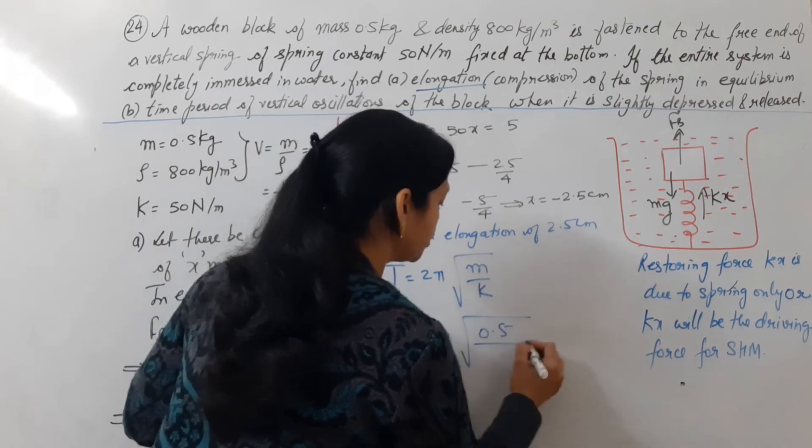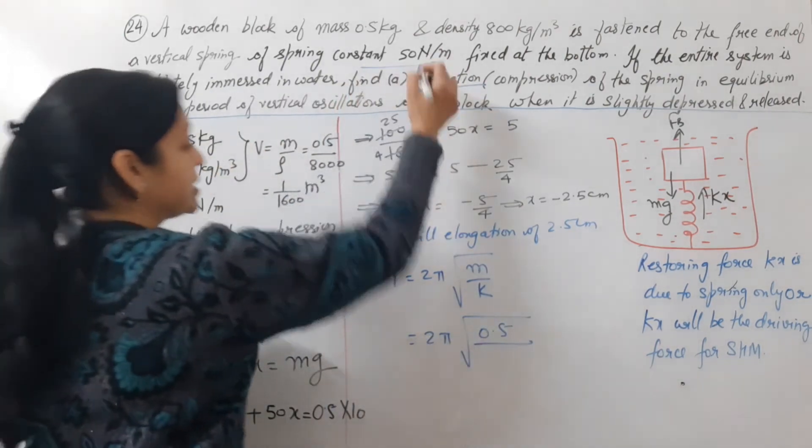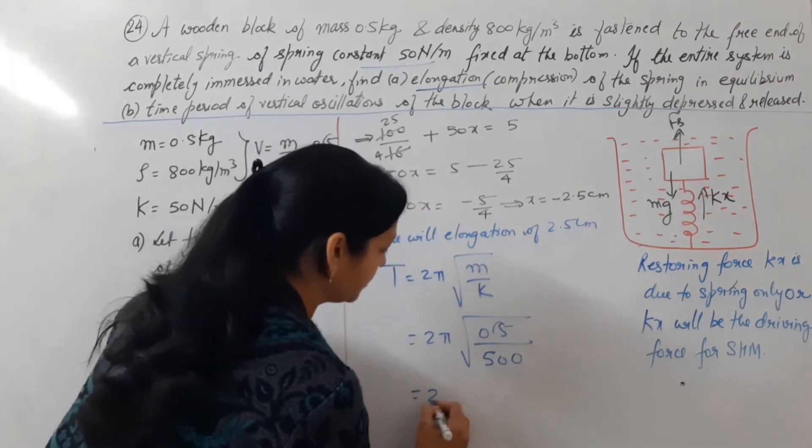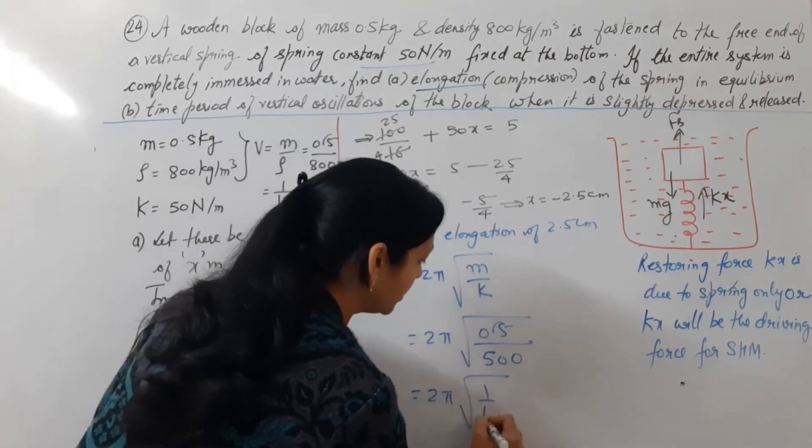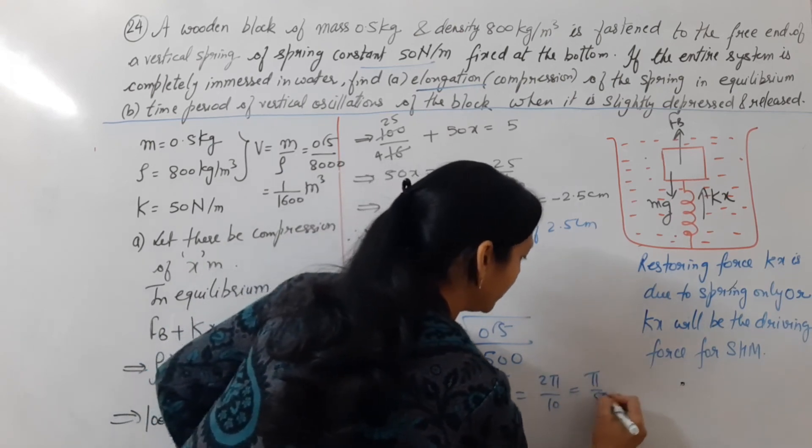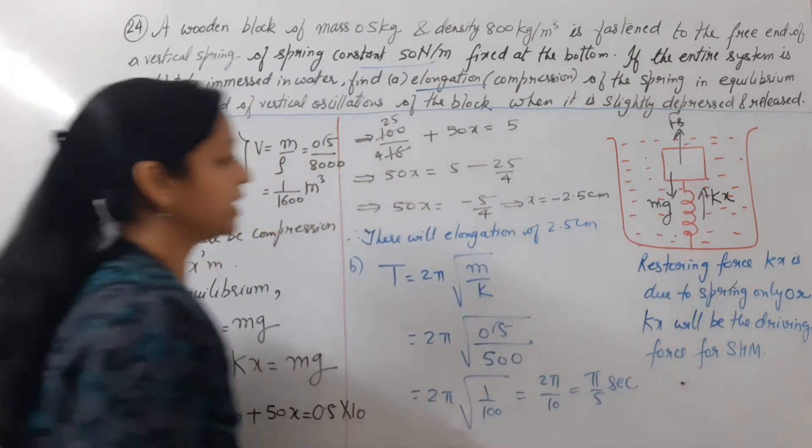Mass is 0.5 kg, and spring constant is 50 Newton. Solving this: 2 pi root over 1 by 100, that means 2 pi by 10, or pi by 5 seconds. So this is the time period of vertical oscillations.